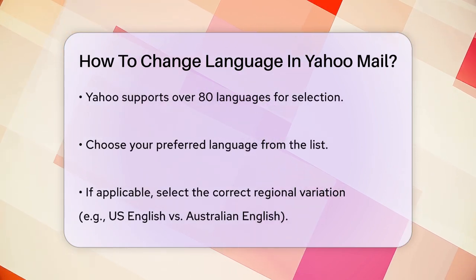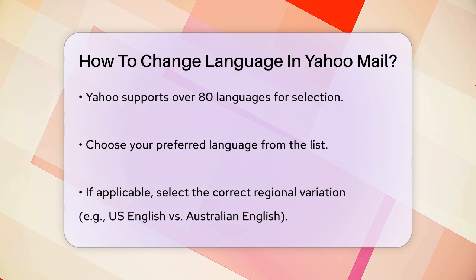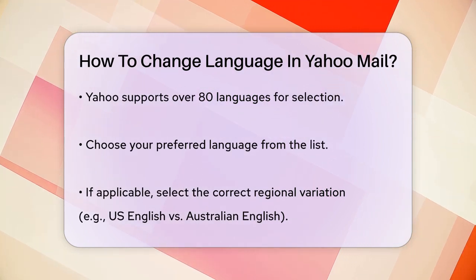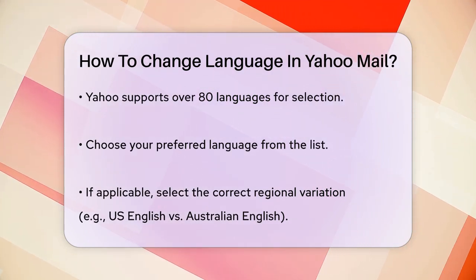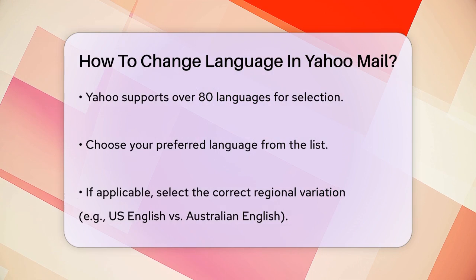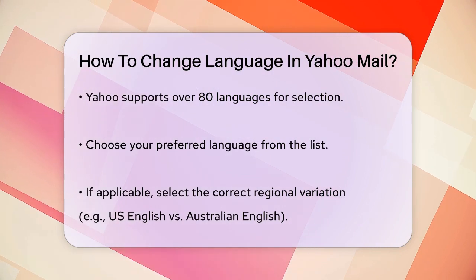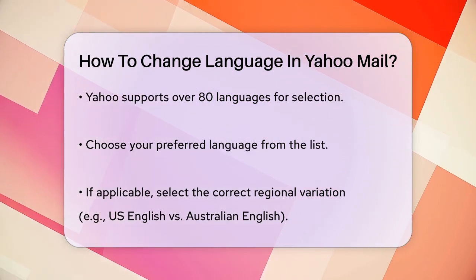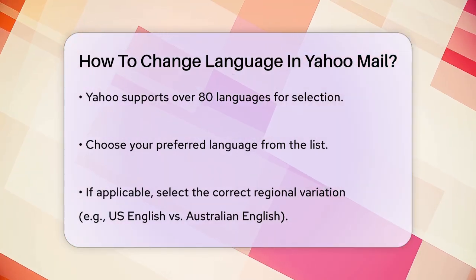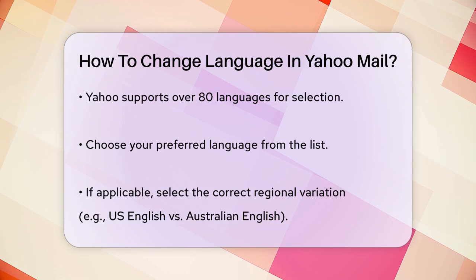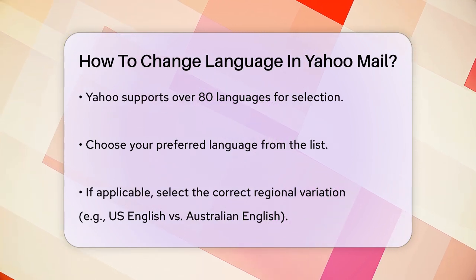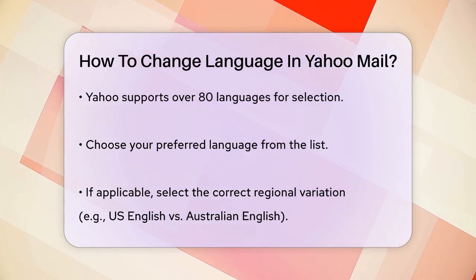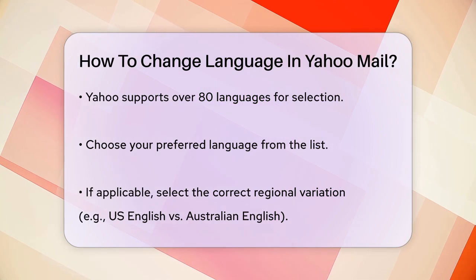If you're changing to a language that has regional variations, such as US English or Australian English, make sure to choose the correct one. After selecting your preferred language, close the tab and click Save. This will apply the changes to your Yahoo Mail account, and you'll see the interface updated to your chosen language.